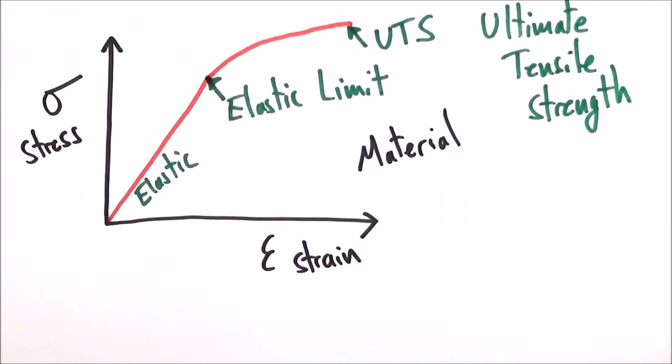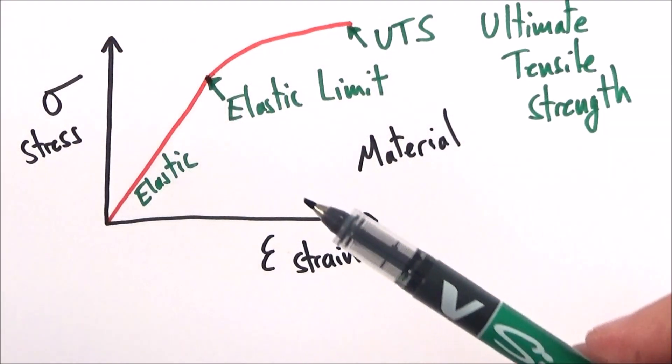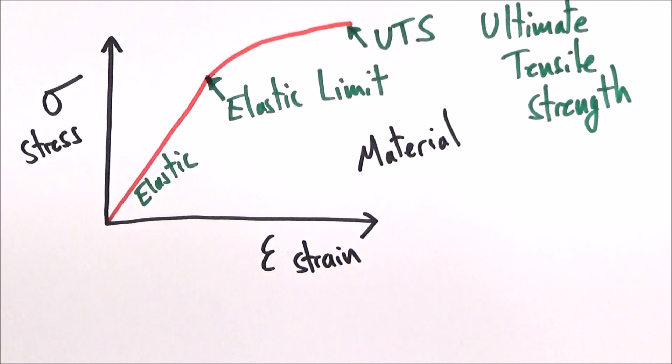Now this is really a simplified version. There are lots of other things here like the yield point, perhaps a limit of proportionality that I haven't included. But the important thing is that the UTS is basically how strong that material is before it fractures.